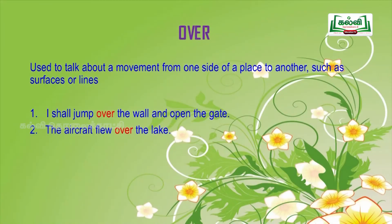Over is also a well-known preposition. It is used to talk about movement from one side of a place to another, such as surfaces or lines. For example: 'I shall jump over the wall and open the gate.' 'The aircraft flew over the lake.'